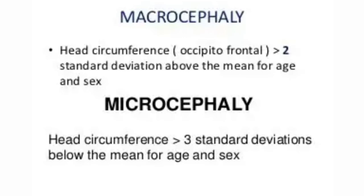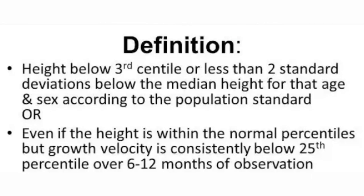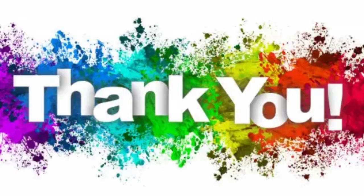Some important definitions: macrocephaly is more than 2 SD above or above the 97th centile; microcephaly is below the 3rd centile, that is minus 2 SD. Short stature is defined as height below the 3rd centile, height below minus 2 standard deviations, or height velocity below the 25th centile measured over a 6 to 12 month period. This was a brief discussion about anthropometric plotting and some definitions.